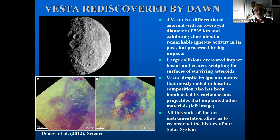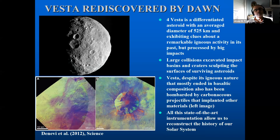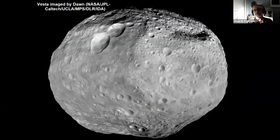Vesta is a body with a diameter of 525 kilometers that exhibits clues about really important igneous activity in large asteroids, just close to the limit of a planetary body. It has also suffered large collisions over time. Thanks to state-of-the-art instrumentation, we can really reconstruct the history of our solar system and all the processes happening in these bodies since their formation. This is a real world discovered — or rediscovered — by the Dawn spacecraft.